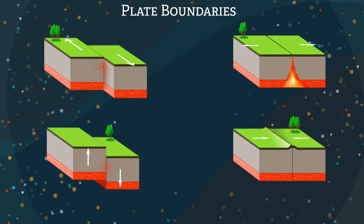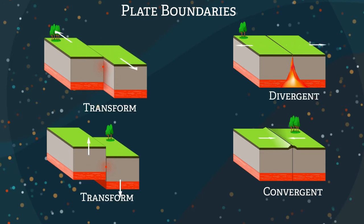There are three types of plate boundaries. Convergent boundaries collide, divergent boundaries divide, and transform boundaries slide together.